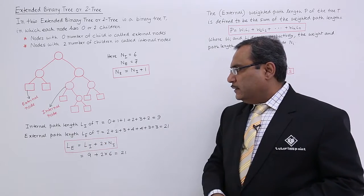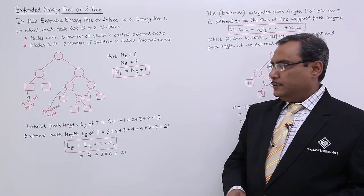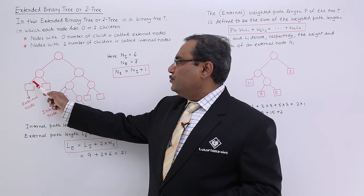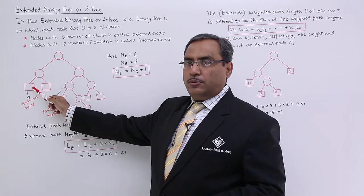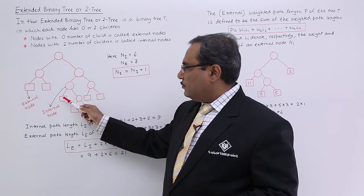So now external path length LE for T. So now in this case it will be 2, it will be 2 because we are having 2 edges from the root node to this particular node. So 2 plus 2,